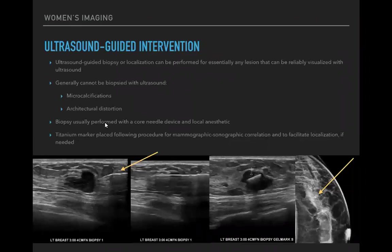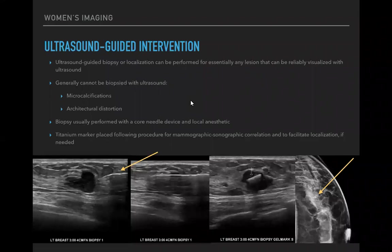For ultrasound-guided intervention, it can be performed for any lesion reliably visualized with ultrasound — it's the least challenging type, most comfortable for patients, and done in real time watching the needle throughout. However, you cannot biopsy what you cannot see with ultrasound, which includes microcalcifications — generally not visible on ultrasound — and architectural distortion, which must be biopsied with mammographic guidance.